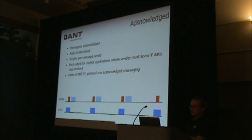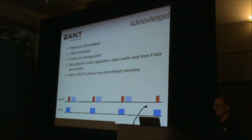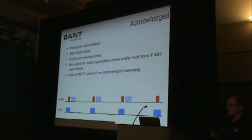There are acknowledged messages, and acknowledged messages are automatically acknowledged by the receiving side of the link. They're fully bidirectional as well, so you can send an acknowledged message from the master to the slave, and you can do the same from the slave to the master. Still eight bytes of data per message period. These types of messages are best suited for control applications, where you need to know whether or not your transmission was successful.